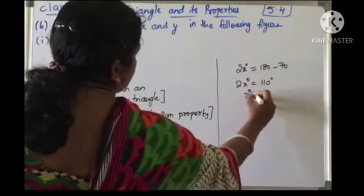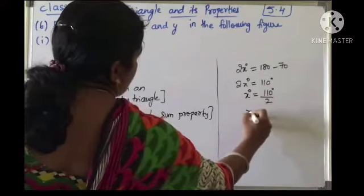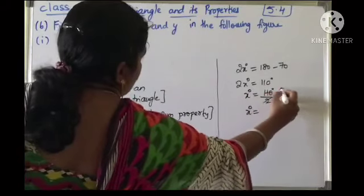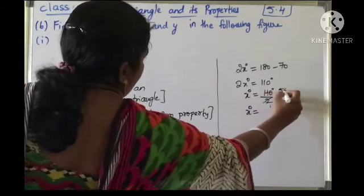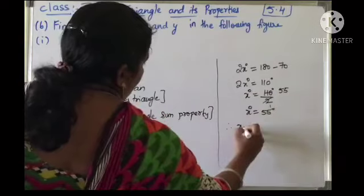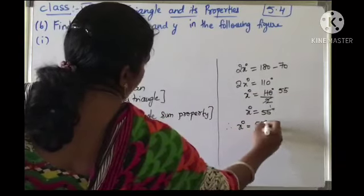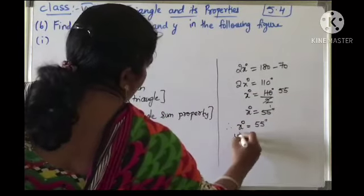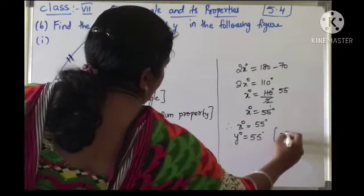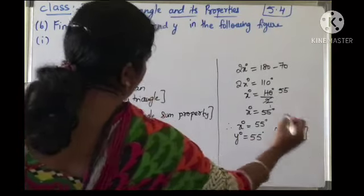So what is x? 110 divided by 2, which gives 55 degrees. Therefore, the value of x is 55 degrees and y is also 55 degrees, because x equals y.